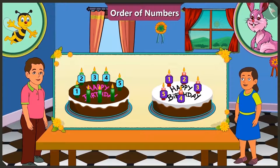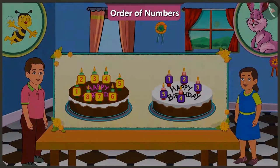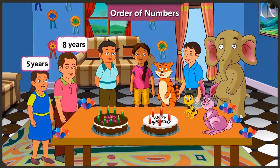Bunty has 3 more candles. Bubbly has a total of 5 candles. So how many candles would Bunty have? Bunty will have 3 more candles. That makes 6, 7 and 8. Bunty has a total of 8 candles on his cake. This shows that Bunty is 8 years old and Bubbly is 5 years old.